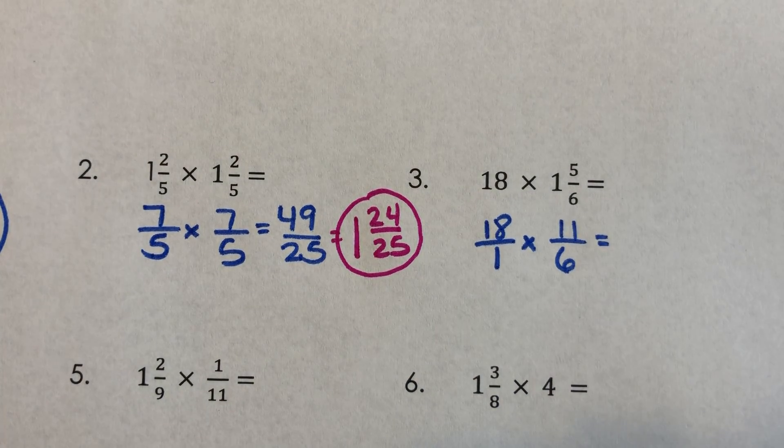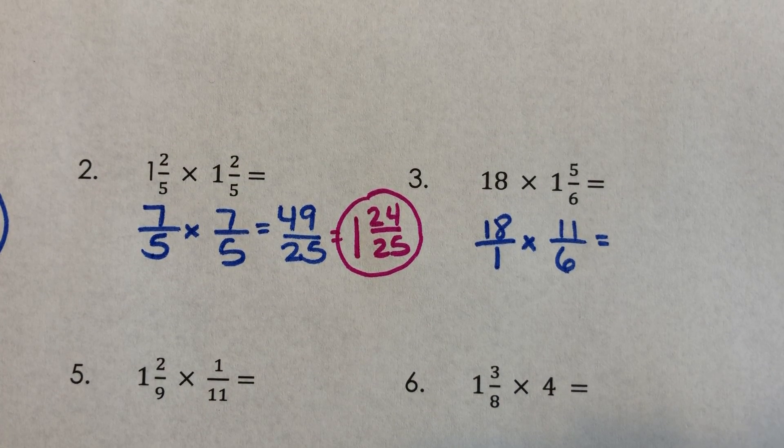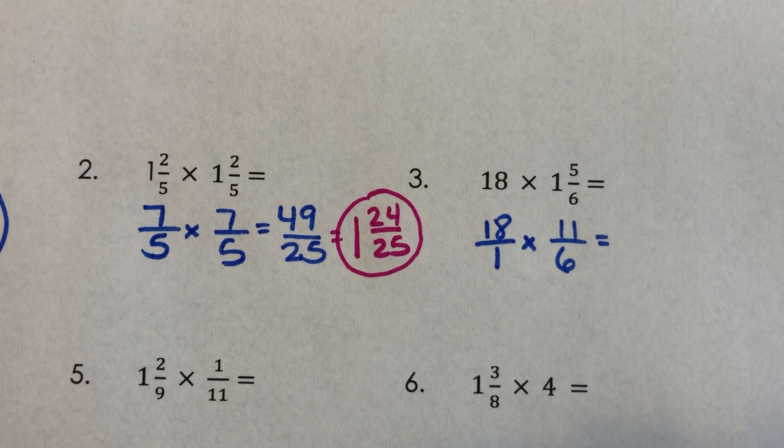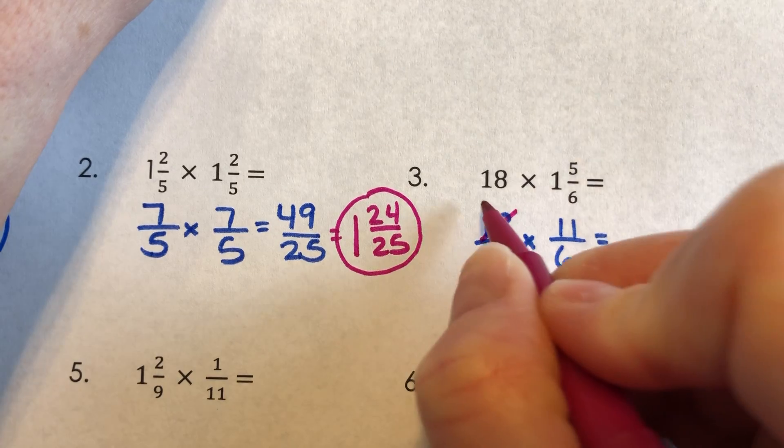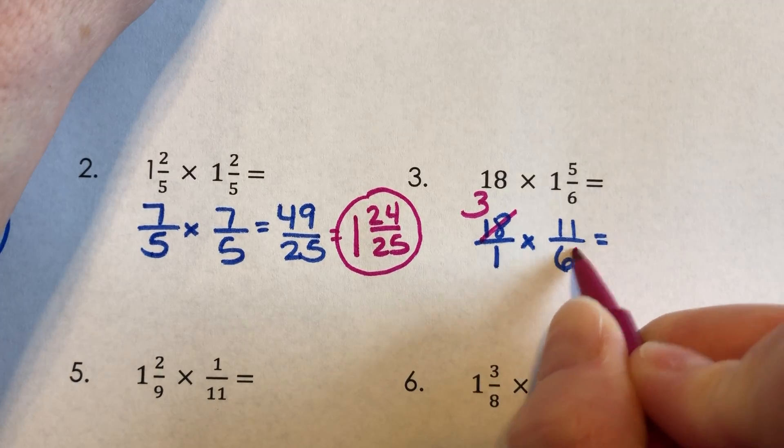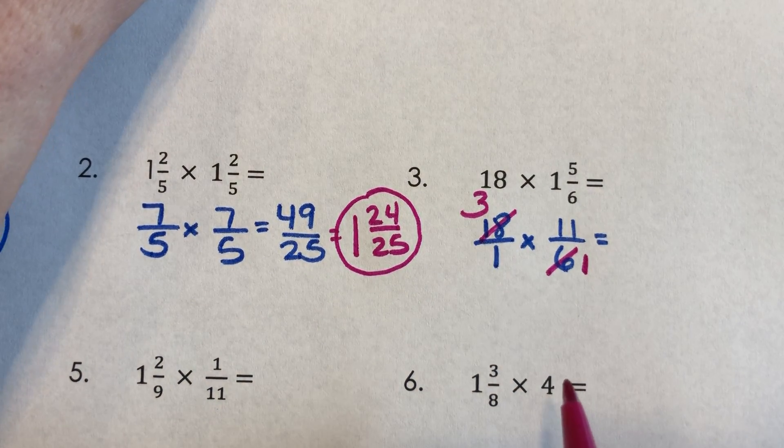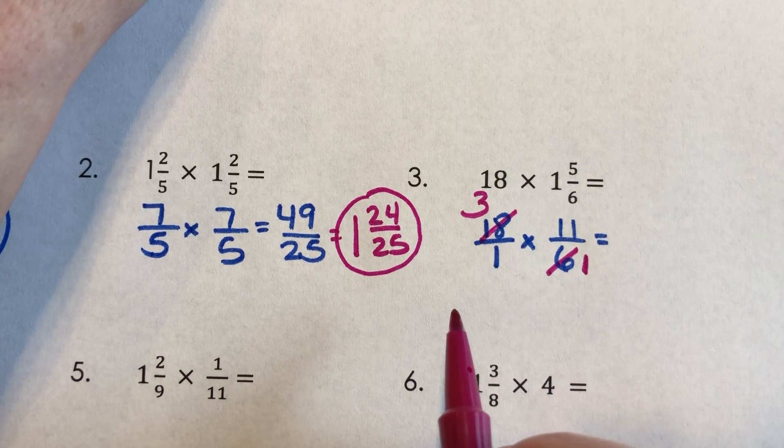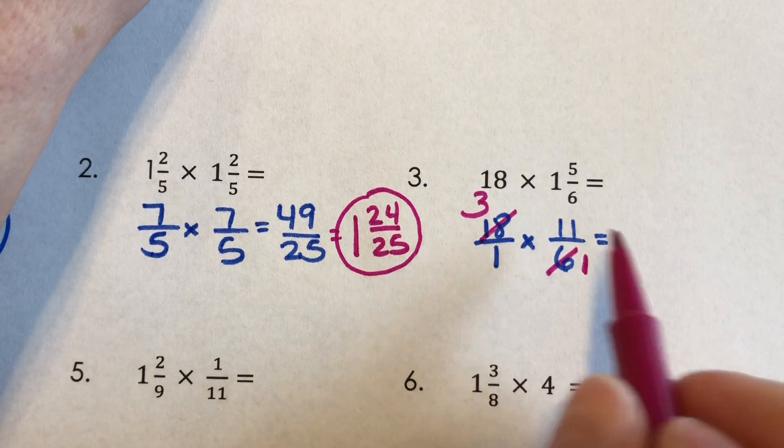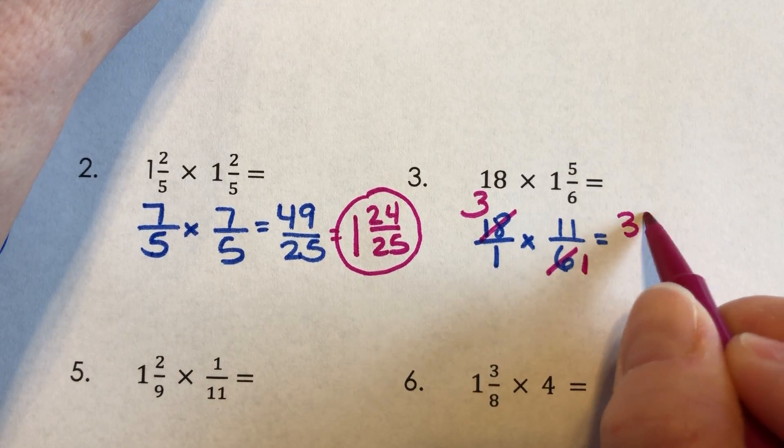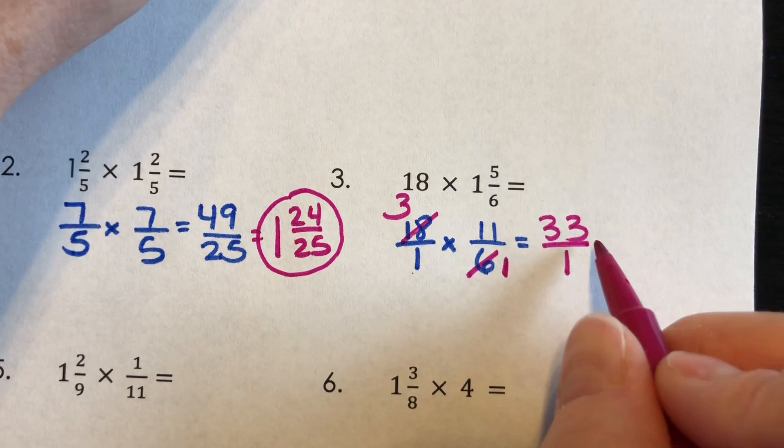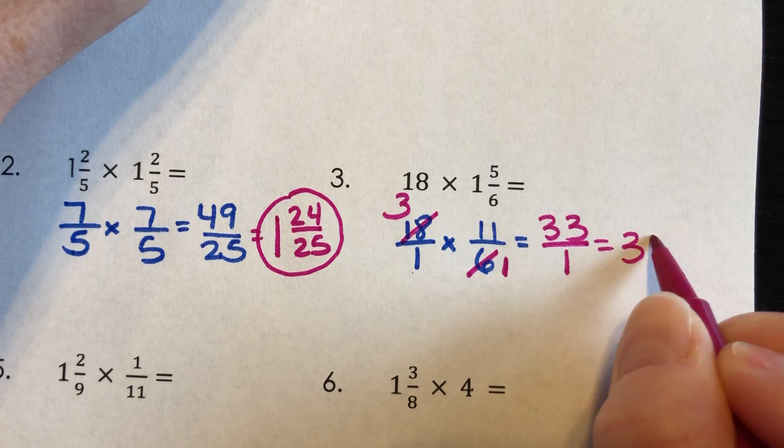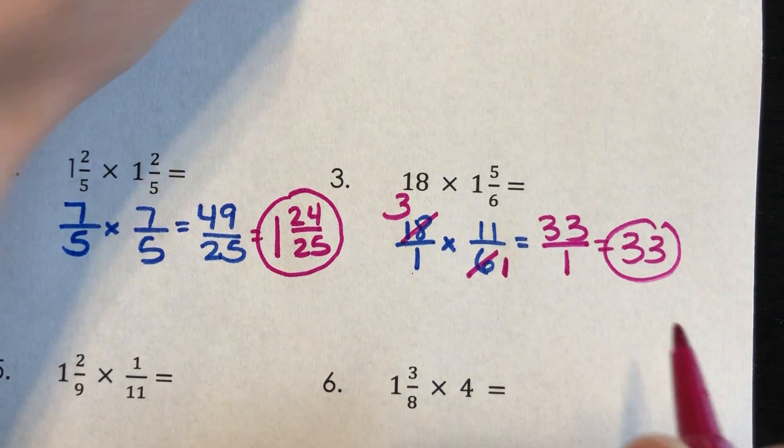I see a 6 and an 18 diagonal from one another. Isn't 6 times 3, 18? That means that 6 goes into 18. 6 goes into 18 three times and 6 goes into 6 one time. So do you have to multiply 18 by 11? No. You have to multiply 3 by 11. And that's 33. And 1 times 1 is 1. And last time I checked, 33 divided by 1 was 33. So there's your final answer.